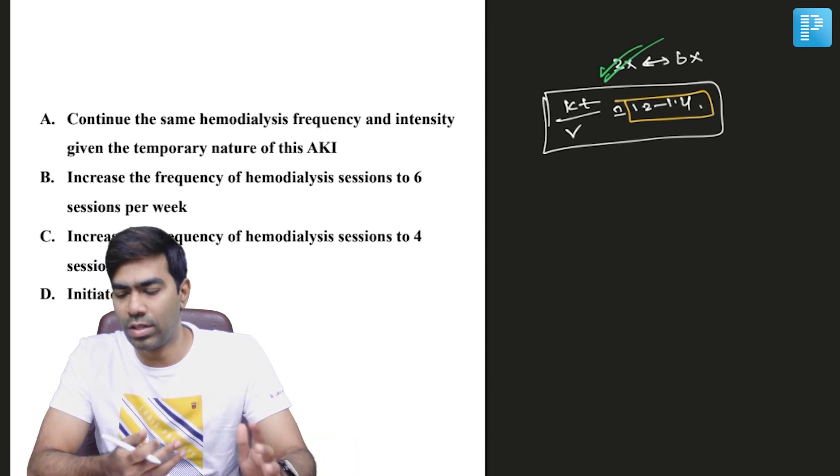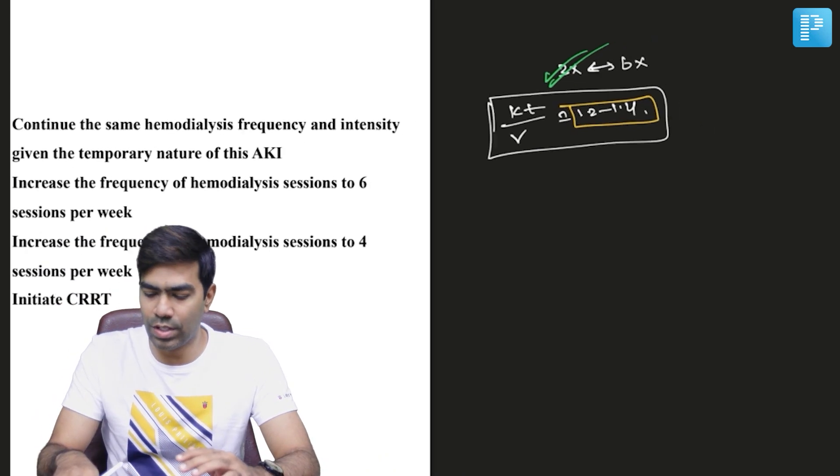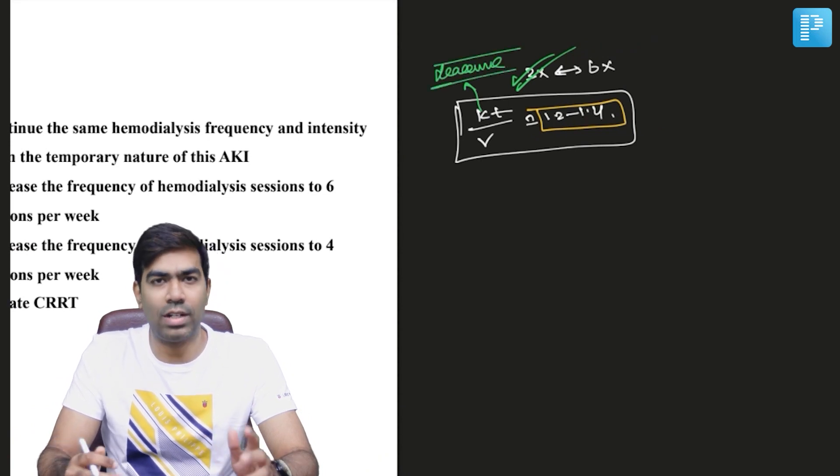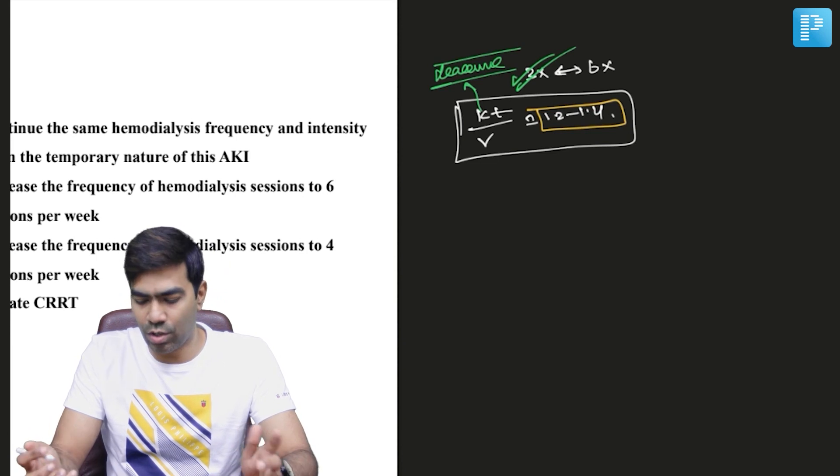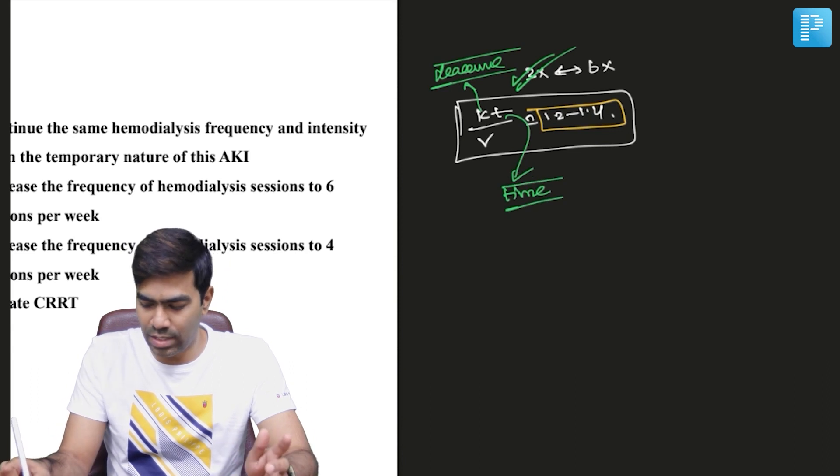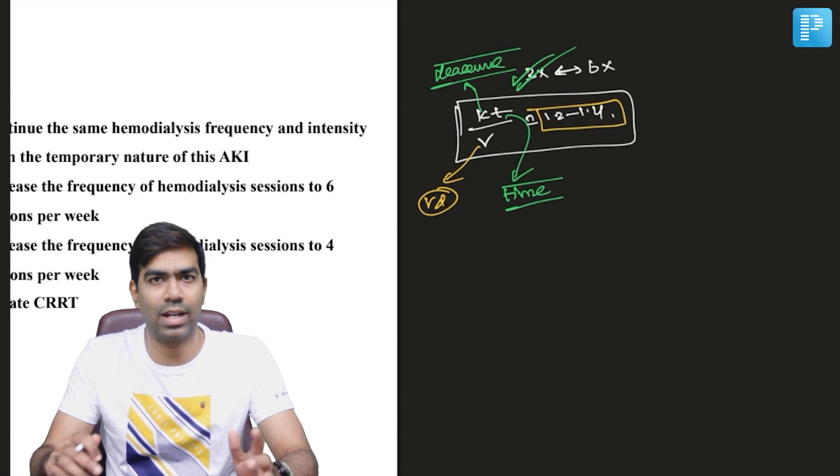How can you improve the KT/V? For that, you need to know what is present in the KT/V formula. K stands for clearance, based on the dialyzer membrane properties, which is something you cannot change much. T stands for the duration of dialysis, which is something you can change. V stands for volume of distribution with regards to urea.